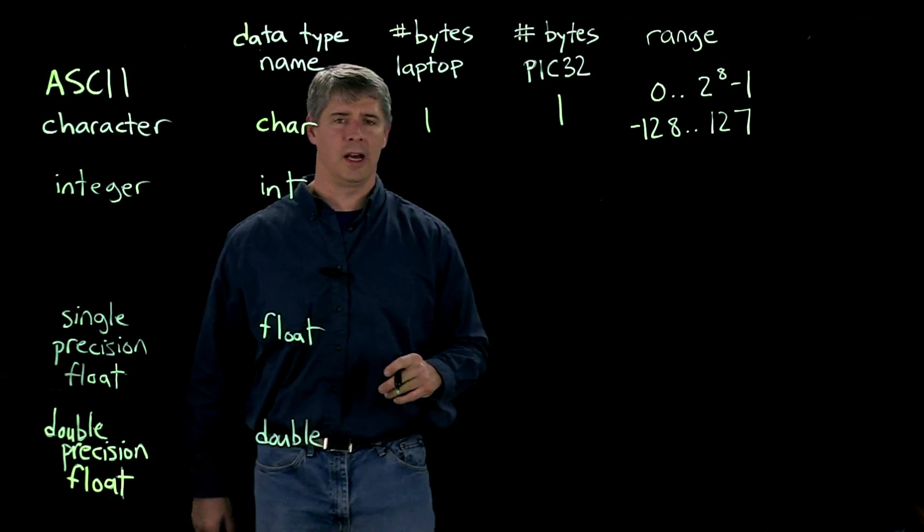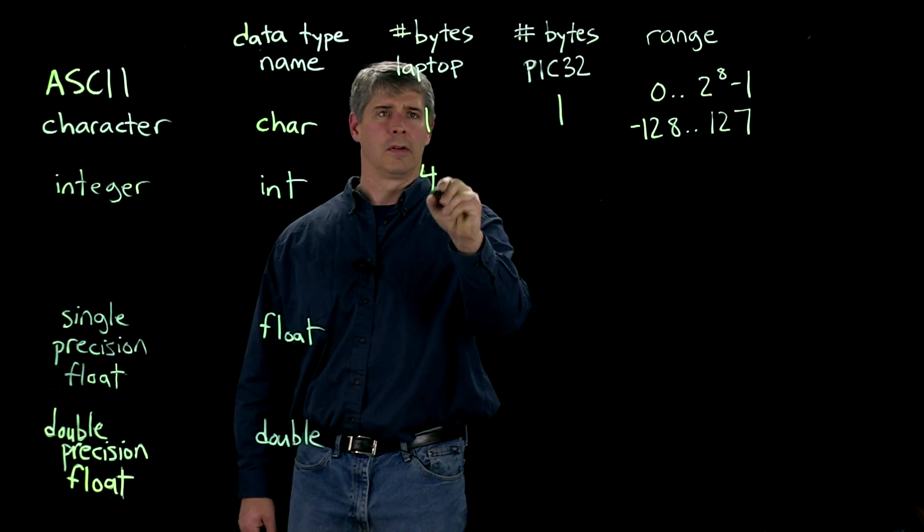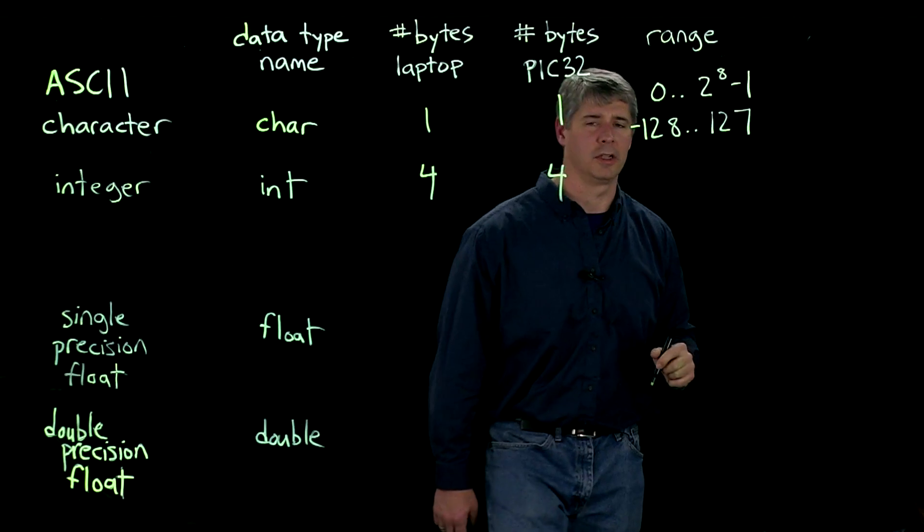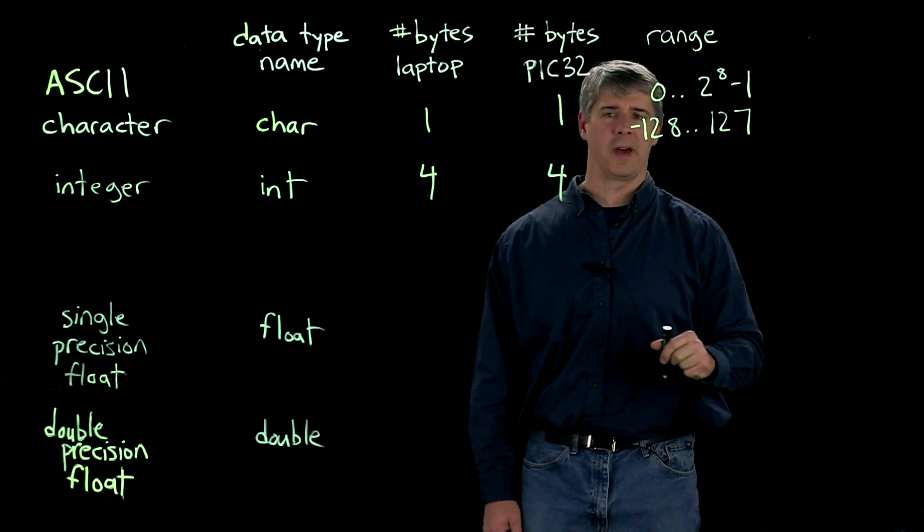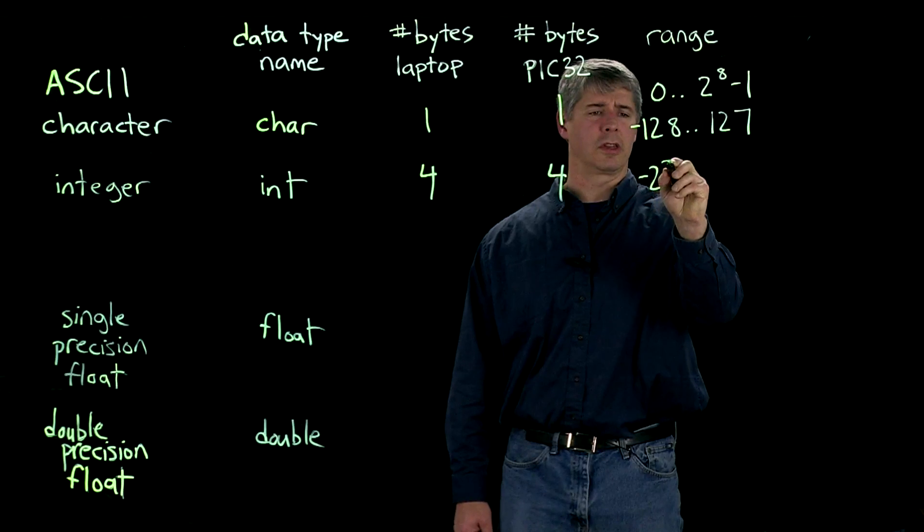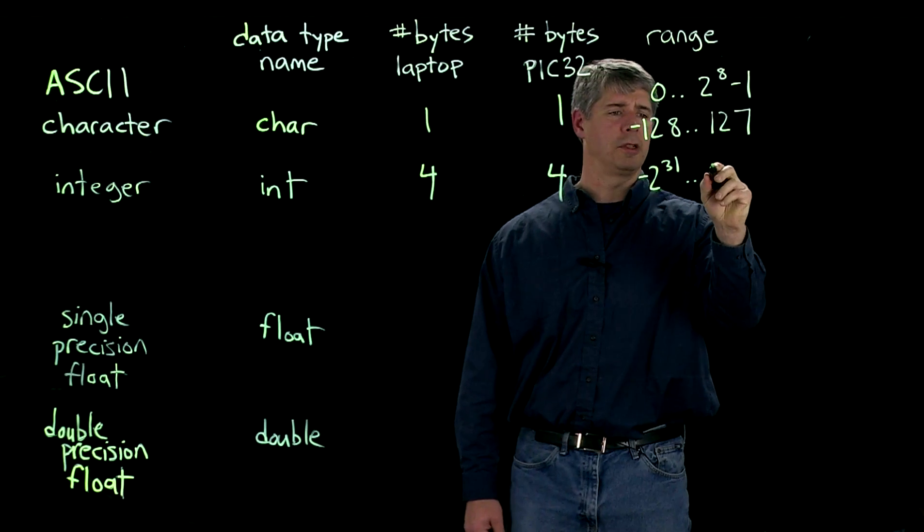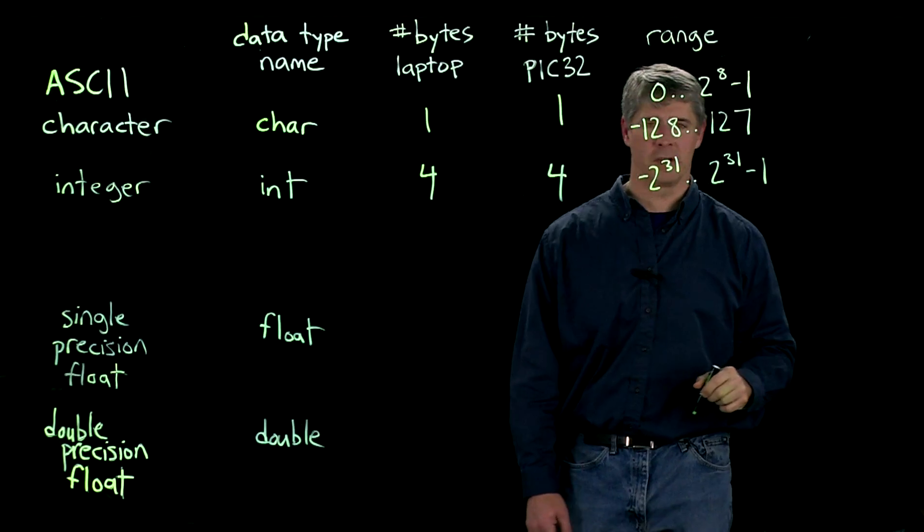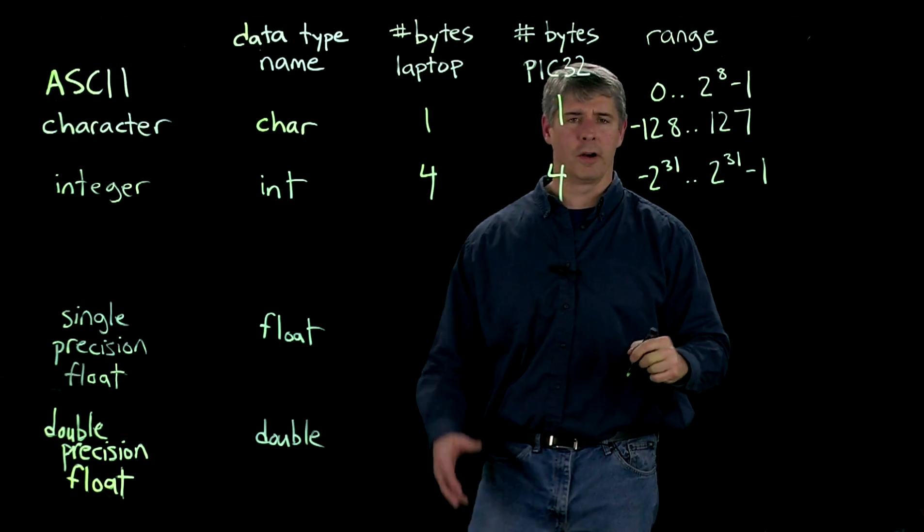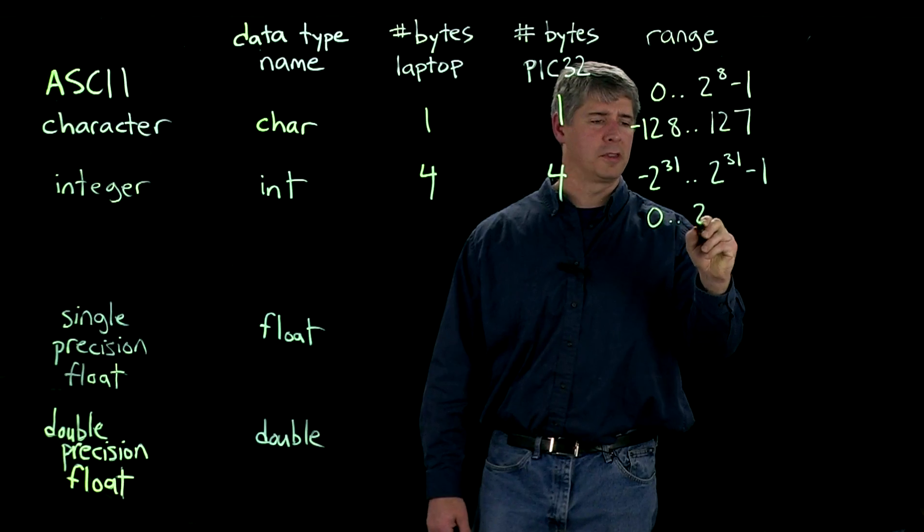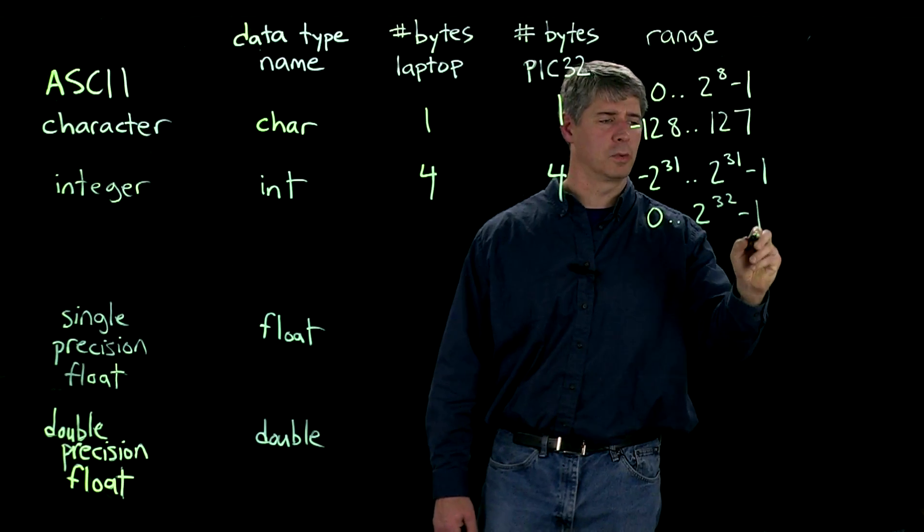Integers typically use four bytes, and that's true for both my laptop and my PIC32. And so, the range of values it can represent are minus 2 to the 31 up to 2 to the 31 minus 1. So, we've got 32 bits to use. Or, if it's going to take only positive values, it can go from 0 up to 2 to the 32 minus 1.